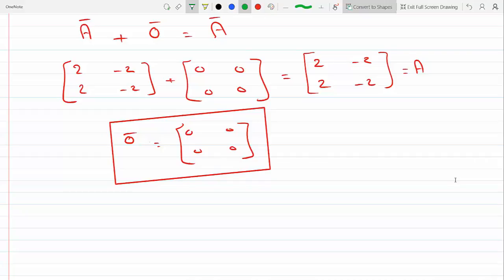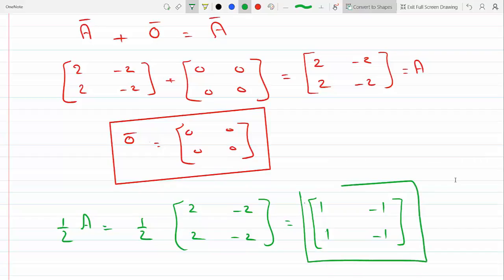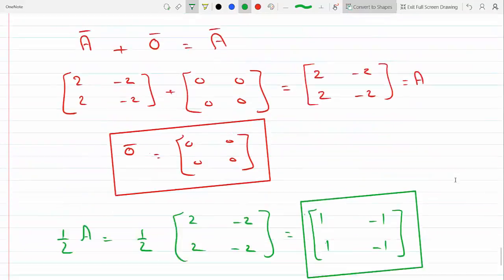Is just half times matrix A, so half of [2, -2; 2, -2]. This is a scalar so we multiply it by every single entry in the matrix, so we get [1, -1; 1, -1]. This would be half A.